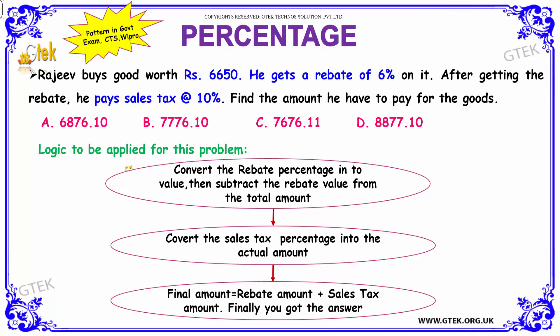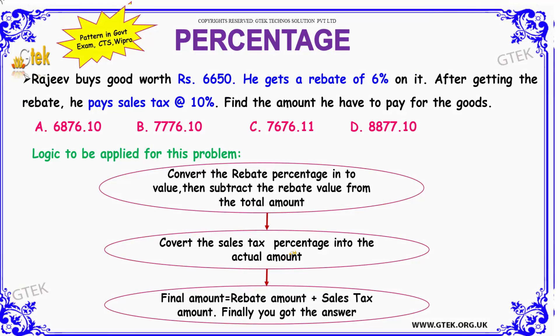The logic that has to be applied for this problem is as follows: you have to convert the rebate percentage into a value, then subtract the rebate value from the total amount 6650. Then you have to convert the sales tax percentage into the actual amount on 6650. Finally, to get the total amount paid, you add the rebate-reduced amount plus the sales tax amount.